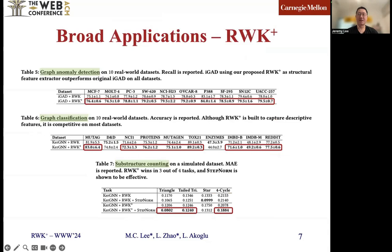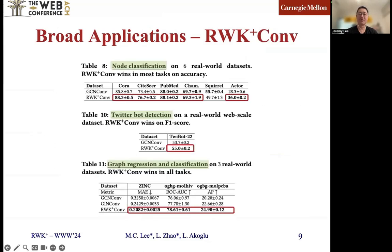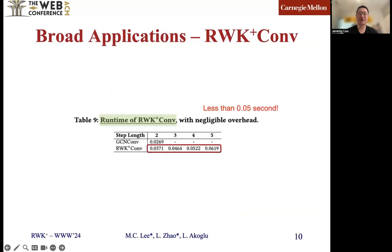We test RWK+ on several tasks and find that KCN with RWK+ outperforms the one with original RWK in all tasks. Compared with the original equation, our efficient computation of RWK+ is 100 times faster. RWK+conv has competitive or even better performance than GCN and conf in node-level tasks. In graph-level tasks, RWK+conv outperforms the best baselines in all tasks without using edge features. Moreover, RWK+conv is fast as well.